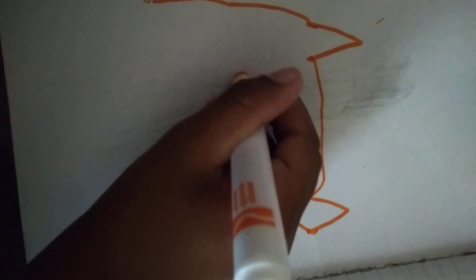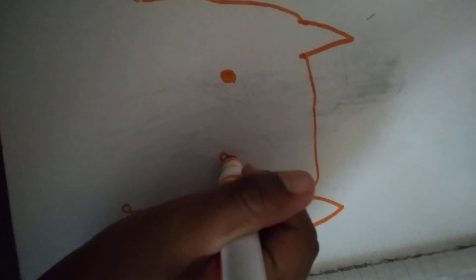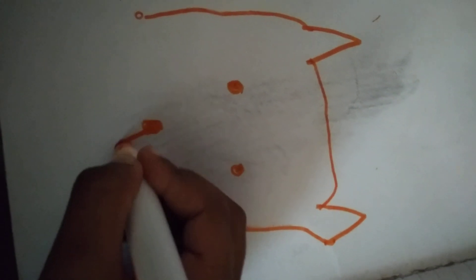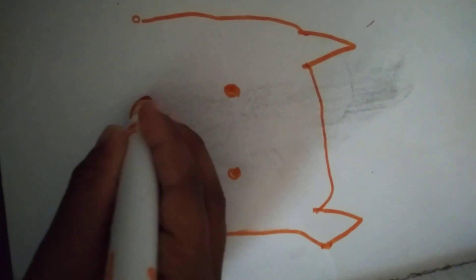Then you draw the eyes. And then the mouth is going to be colored in. Then you do this and then you do it on the other side.